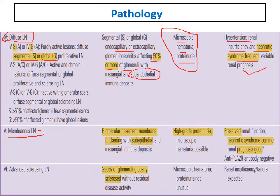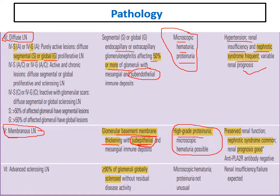Class 5 is membranous lupus nephritis. By light microscopy, there is glomerular basement membrane thickening, and by immunofluorescence, deposits are in the sub-epithelial space — characteristic of membranous nephropathy. The main presentation is nephrotic syndrome with heavy proteinuria more than 3.5 gram per day. Microscopic hematuria is less common than in class 3 and 4. Renal function usually remains preserved for a long time, and renal prognosis is good compared to class 3 and 4.